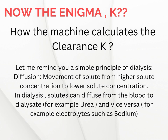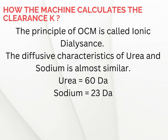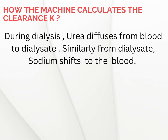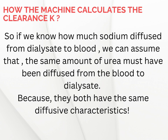How does the machine measure clearance without a blood test? It uses an innovative principle called ionic dialysis. Urea and sodium have similar diffusive properties, so by tracking how much sodium moves across the membrane, the machine estimates how much urea is removed. The machine has two conductivity sensors — one at the dialysate inlet and one at the dialysate outlet. The machine momentarily increases sodium levels and continuously monitors how much gets transferred. If sodium shifts, urea must have shifted too.